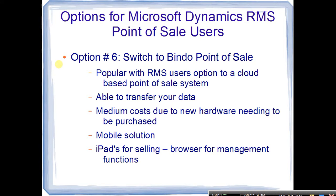Option six is the Bindo point-of-sale system, which has been popular with RMS users looking for a cloud-based solution. There is the ability to transfer your data from RMS into Bindo. Costs are medium because you need new hardware like a cash drawer, receipt printer, and barcode scanner. It is a mobile solution — iPads are used for selling, and any device with an internet browser handles management functions like purchasing and receiving. You can manage from anywhere — home, on the road — and smaller businesses can use just an iPad.